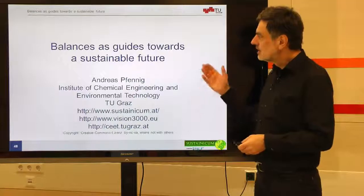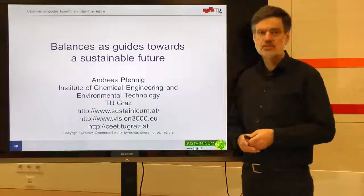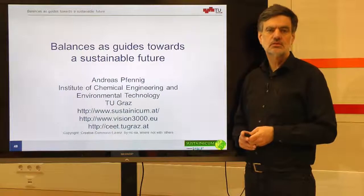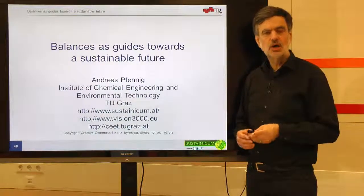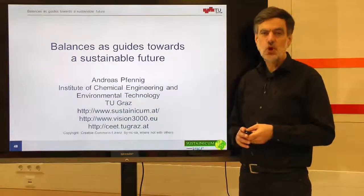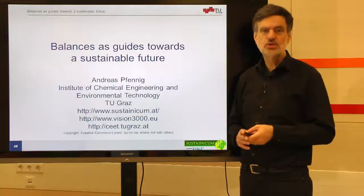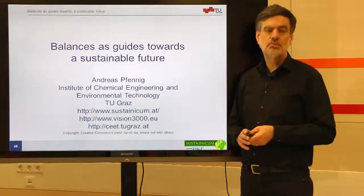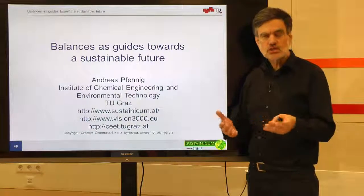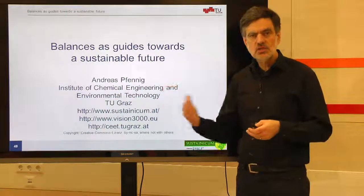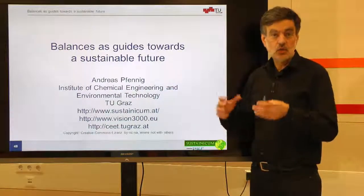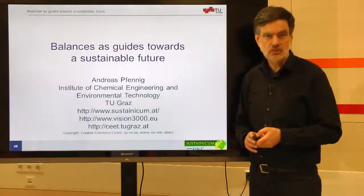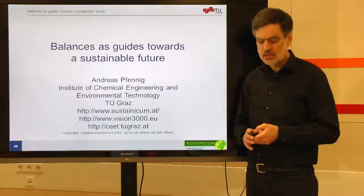Welcome to the next lecture on balances as guides towards a sustainable future. Last time we dealt with balances — how to set them up, how to utilize them — and we learned that the global average temperature stems more or less from the balance between radiation coming in from the sun and leaving the earth by its own radiation. We saw how greenhouse gases have an effect on that and how we can see that from the balances.